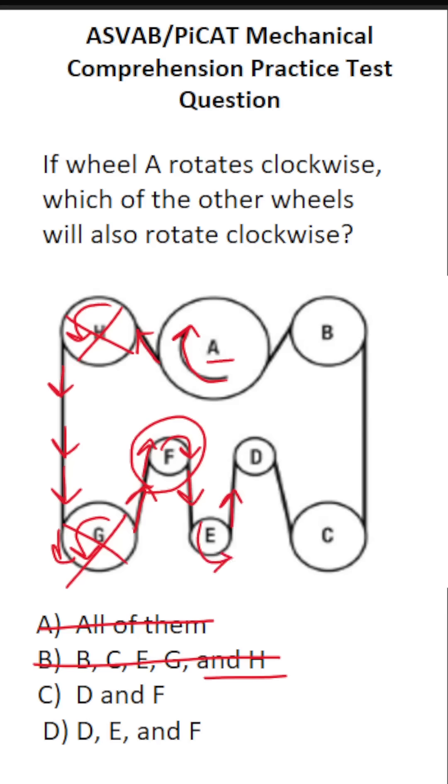Wheel E is going to spin this way, that is counterclockwise. So we're not going to include wheel E. We know this one's not correct. By process of elimination, we know the correct answer is C. But that said,